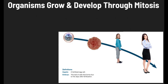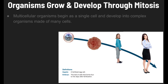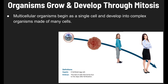We need to talk about how organisms grow and develop through the process of mitosis. Multicellular organisms begin as a single cell, and this single cell develops eventually into a complex organism — an adult human — that's made of many cells, trillions of cells to be exact.